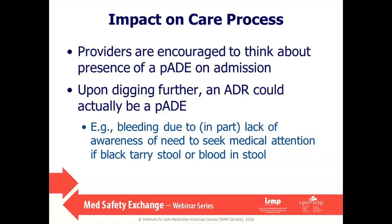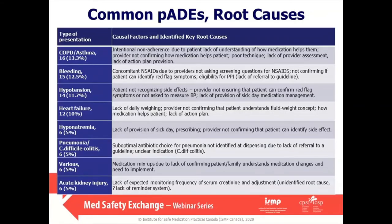The most common types of presentation due to preventable adverse drug events were COPD and asthma, bleeding, hypertension, and heart failure. Our learning messages address approximately 80% of the common preventable adverse drug events and their associated root causes. One example for bleeding included in our message is that community providers are not necessarily asking screening questions about NSAID use when patients are on an anticoagulant.